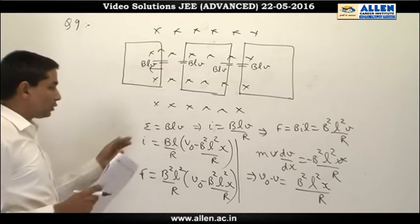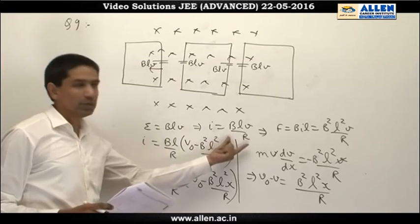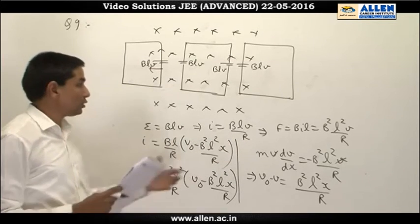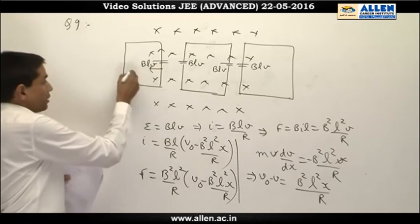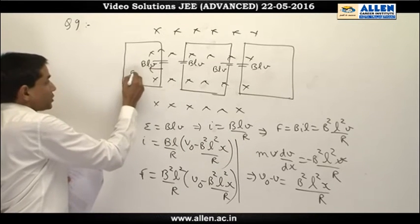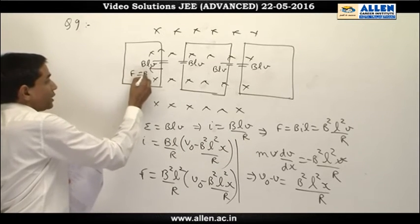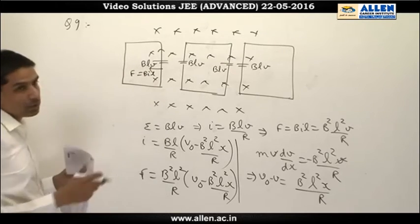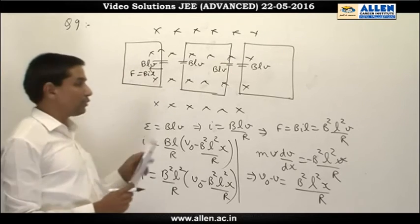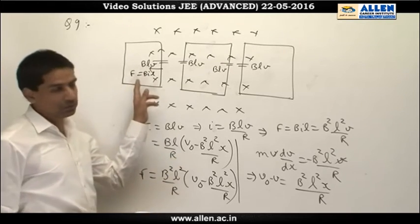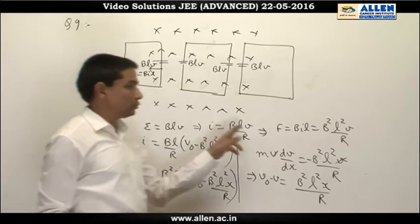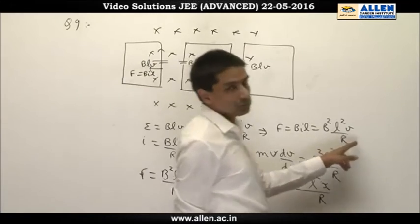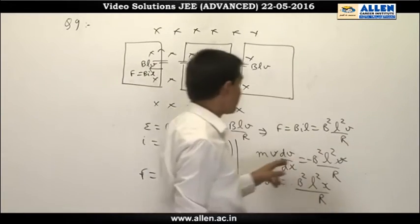The EMF will be equal to Blv, and the current will be Blv/R. So the force will be acting in this direction — that force will be BIl. Note that the rest of the part is not within the magnetic field, so it does not experience any force. Therefore the net retarding force becomes B²l²v/R.